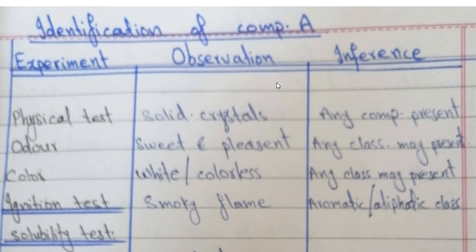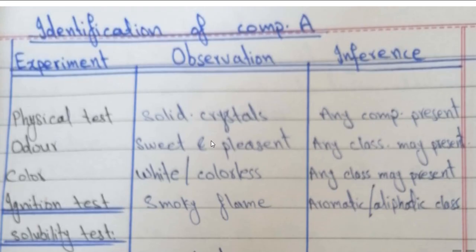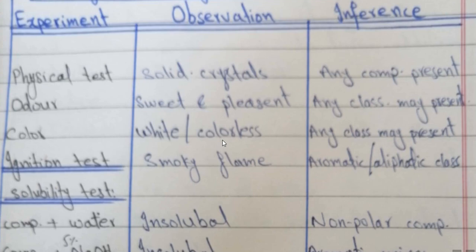The color is white or colorless, as observed. This is an important clue. Any other class can be present. If we test the ignition, a smoky flame will come. This will be a clue that the compound is aromatic or aliphatic.